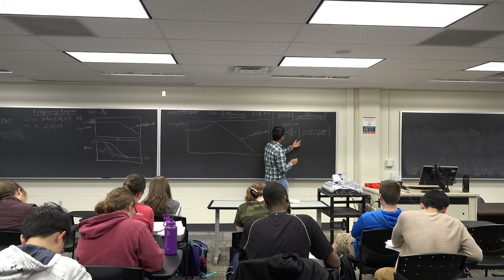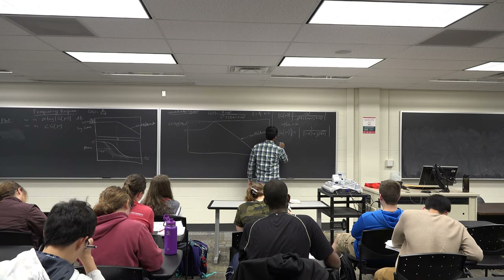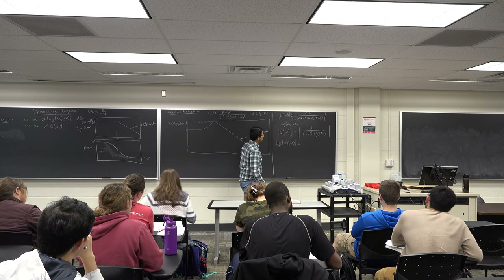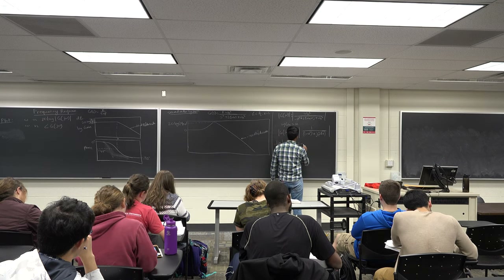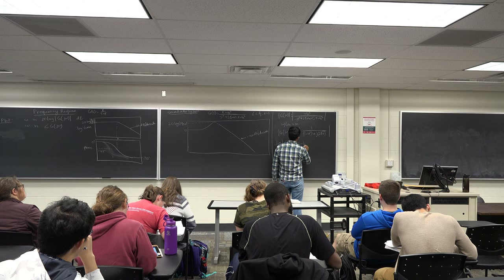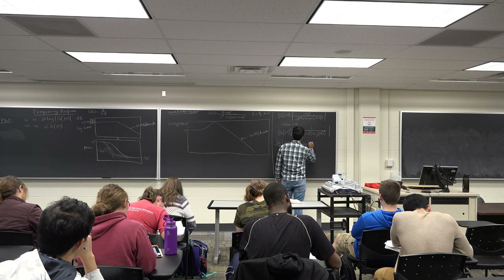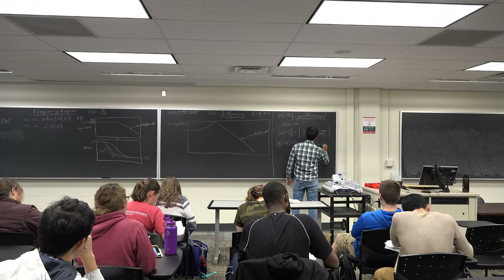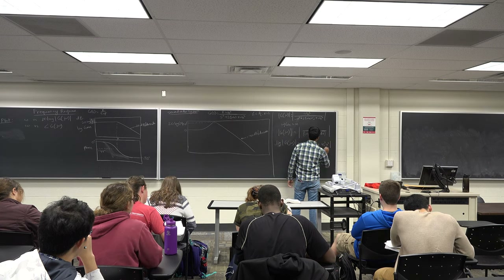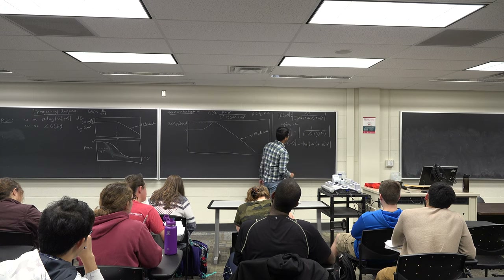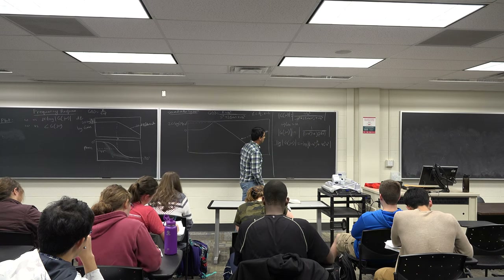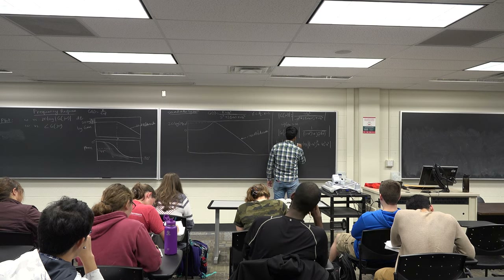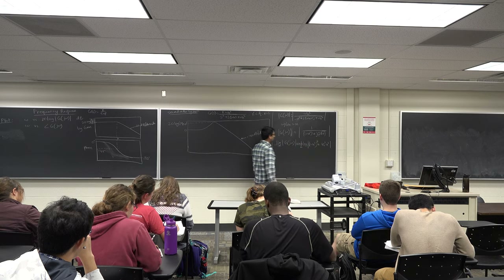So what is the log of |G(ju)|? That is minus log of |(1 − u²)² + 4ζ²u²|, with a half in front — that is, minus one-half log of (1 − u²)² + 4ζ²u².